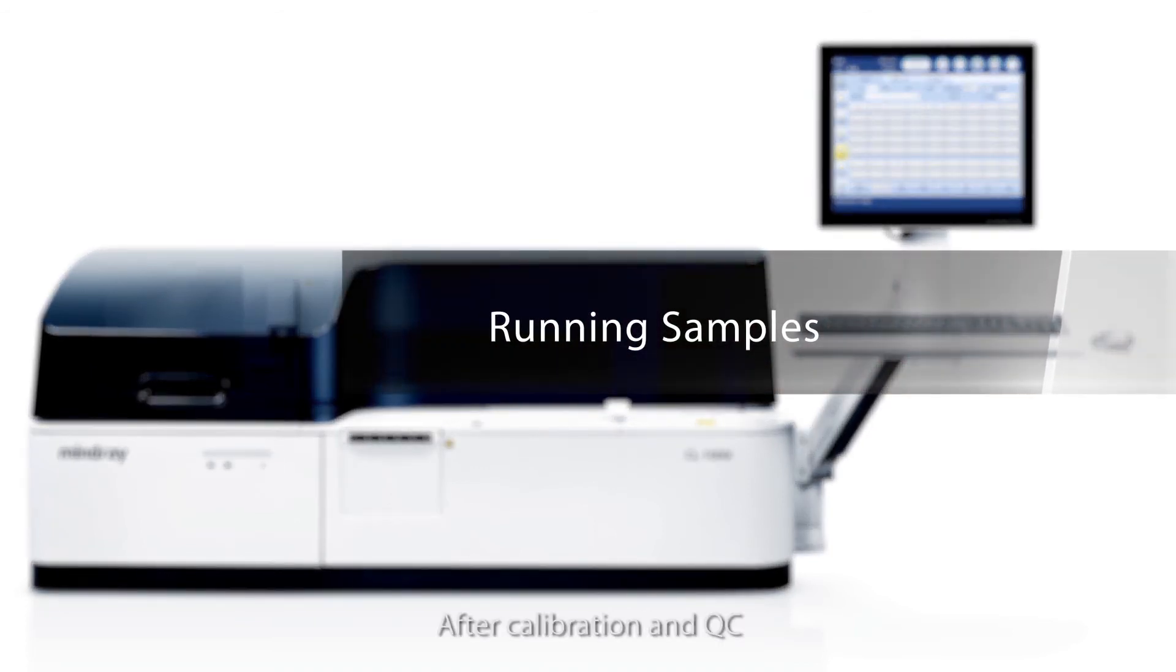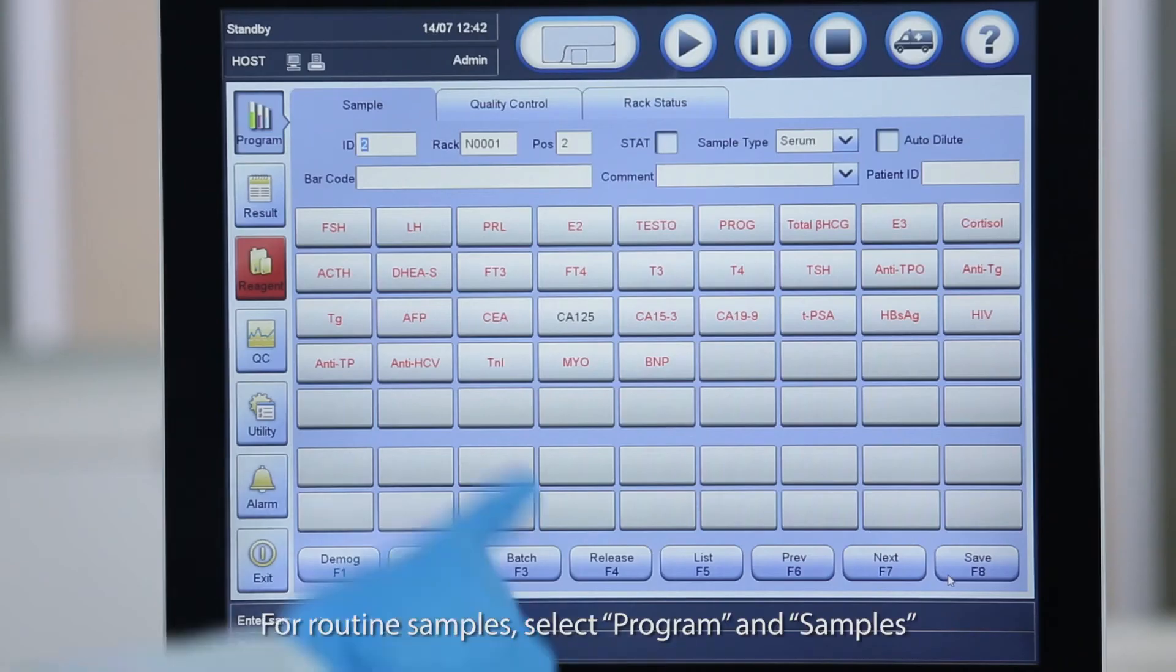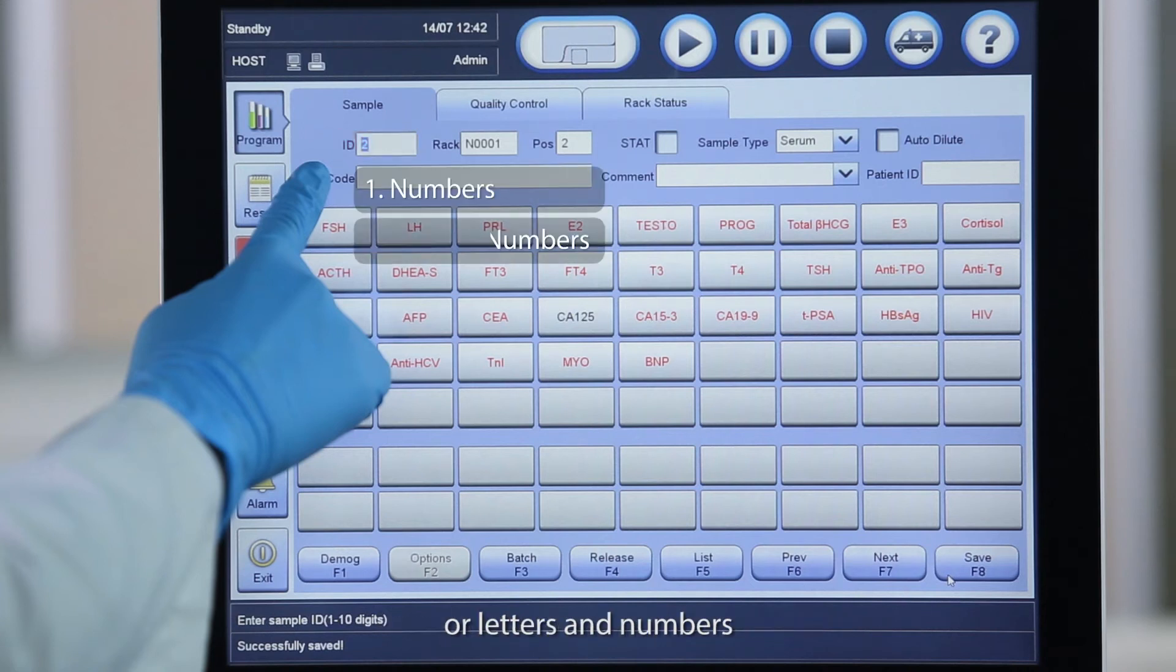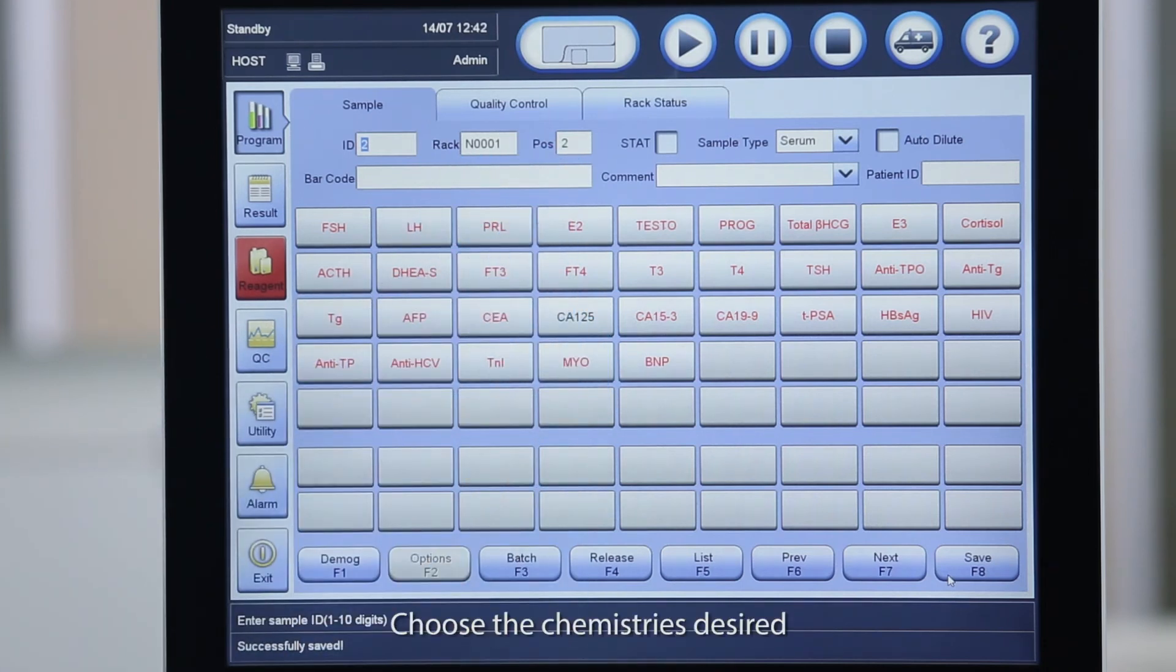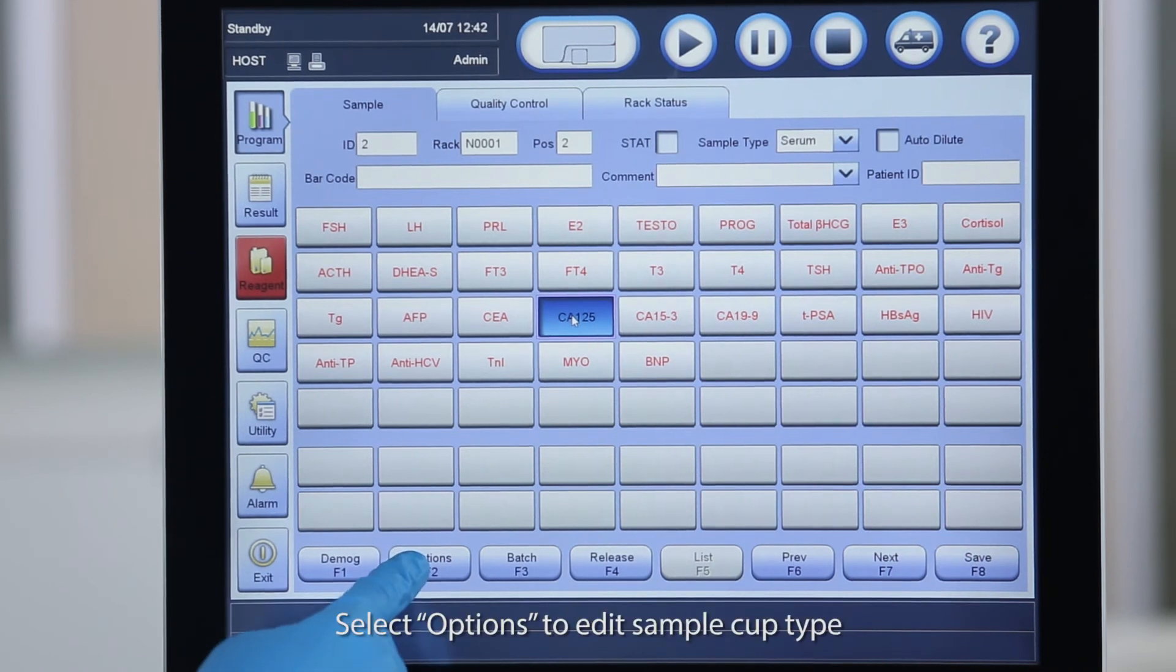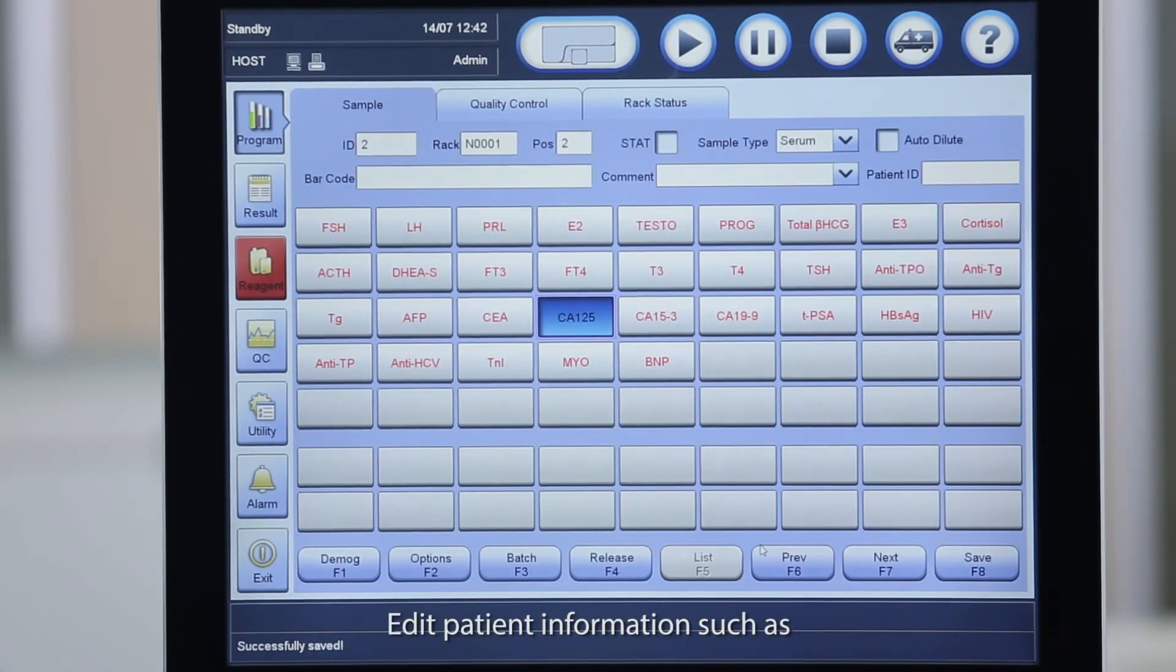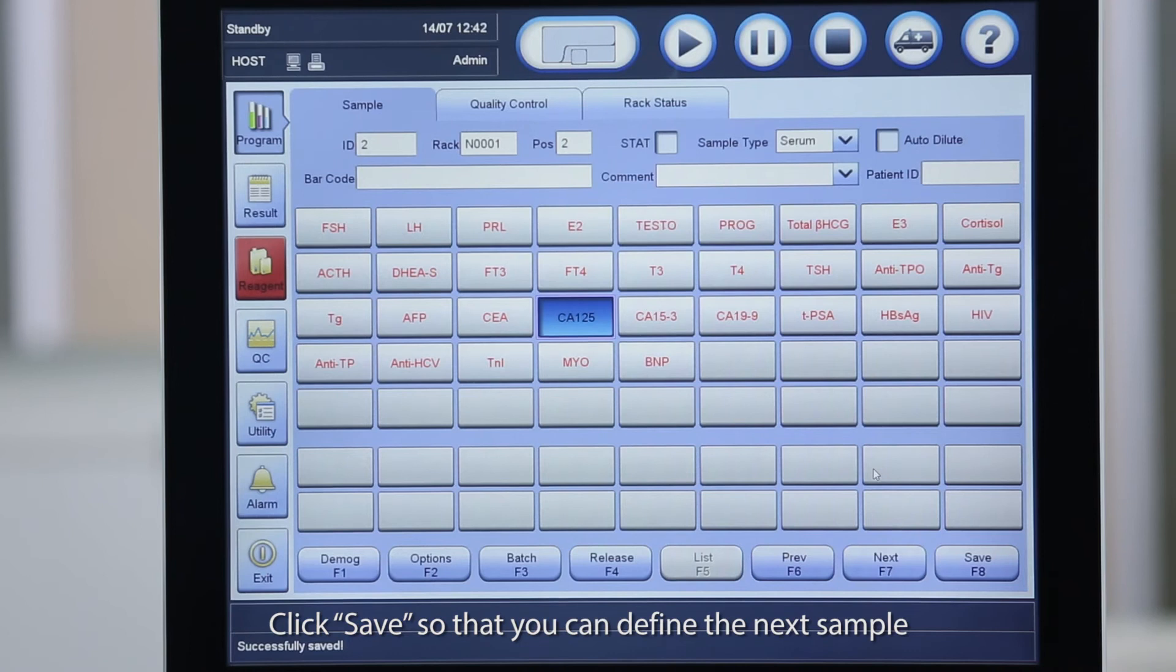After calibration and QC, we can run samples. You can run both routine samples and stat samples. For routine samples, select Program and Samples. Enter the sample ID. Sample ID is composed of numbers or letters and numbers. Up to 10 digits can be entered. Input the Rack ID and position number based on the analysis mode. Choose the chemistries desired. Only those in black can be requested for analysis. Select Options to edit sample cup type, replication and dilution. Edit patient information such as age and gender in Demographics window. Click Save so that you can define the next sample.